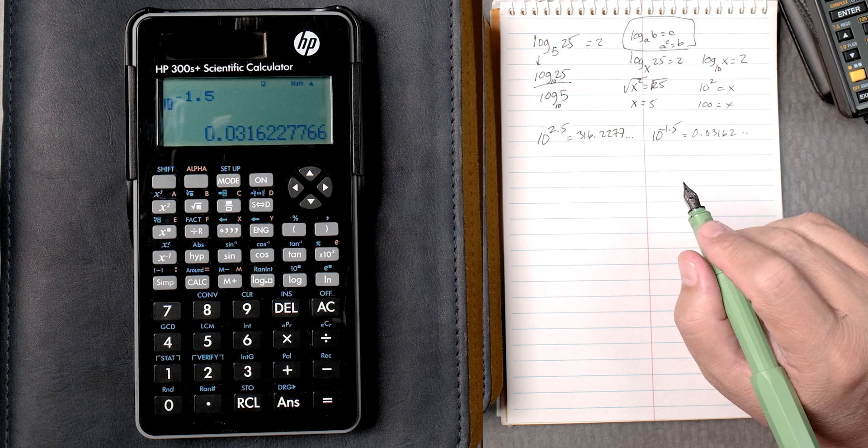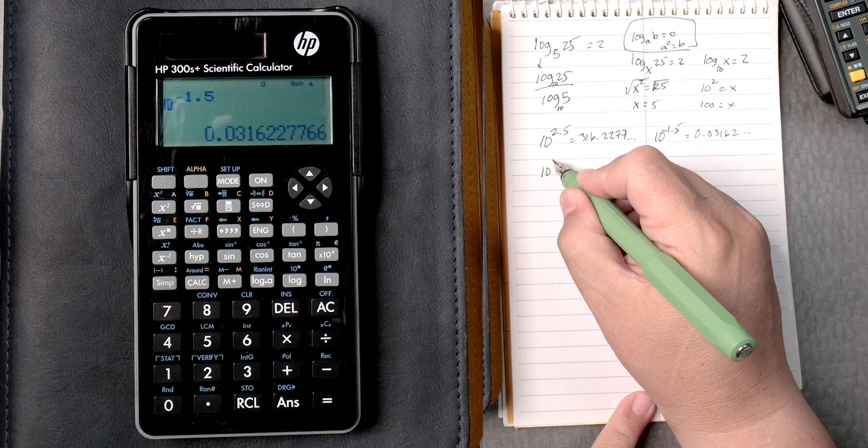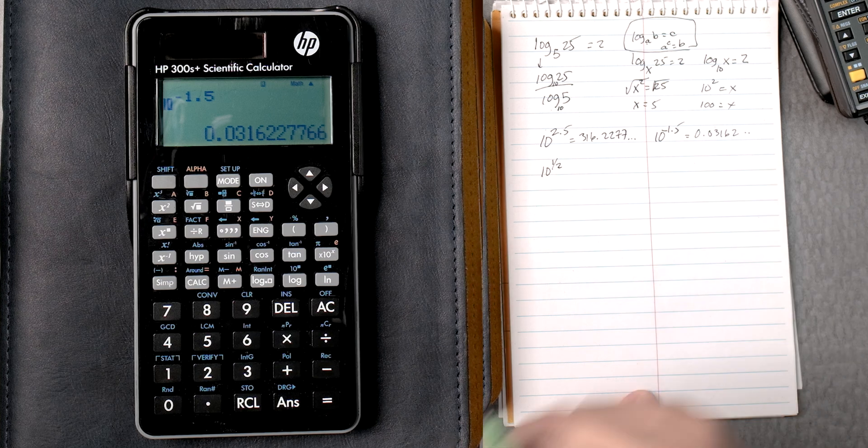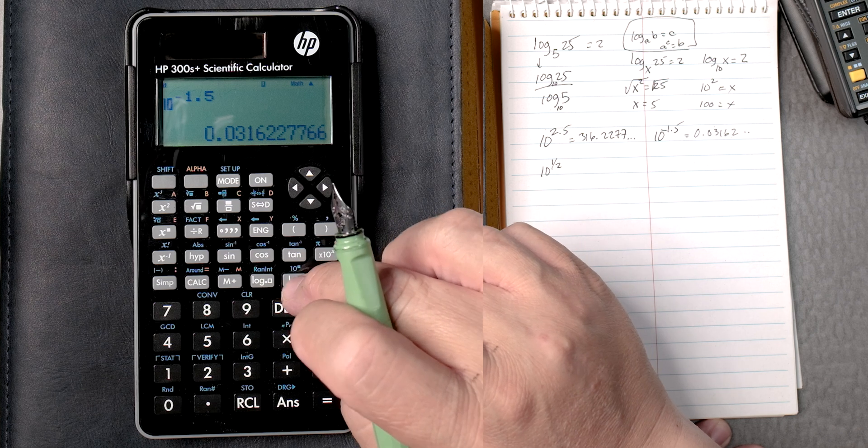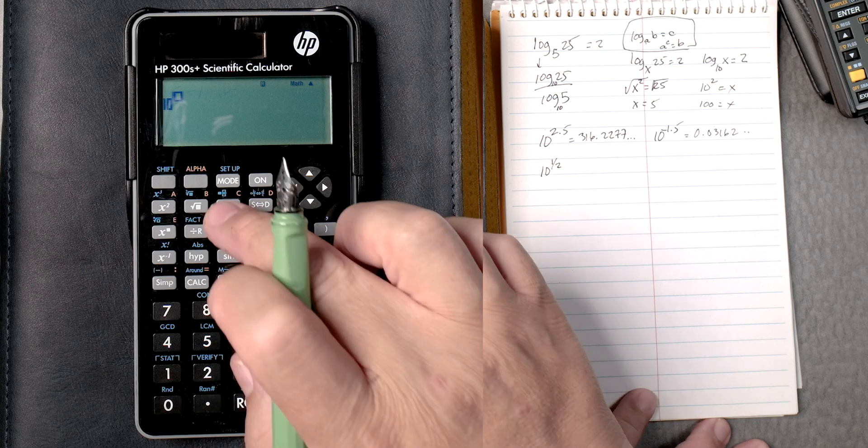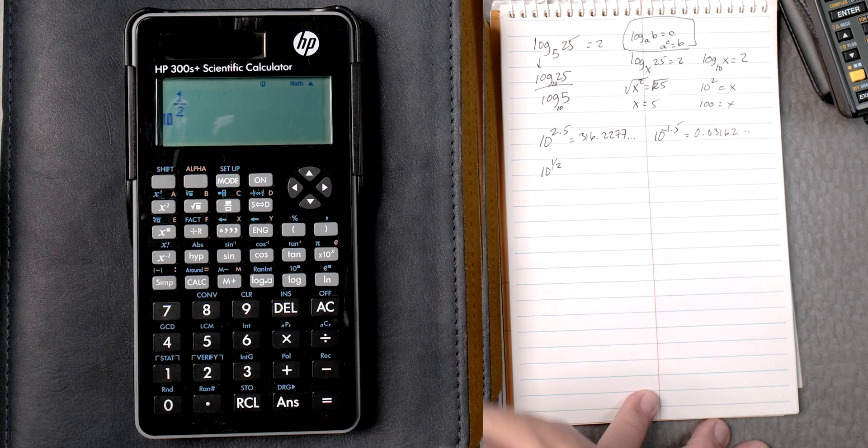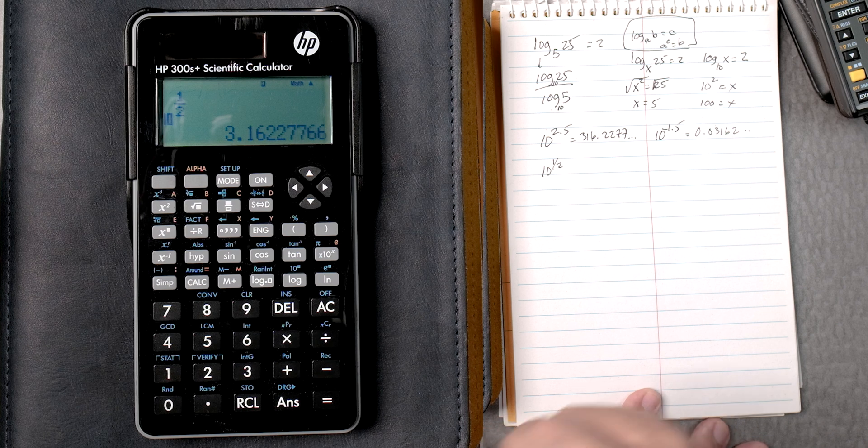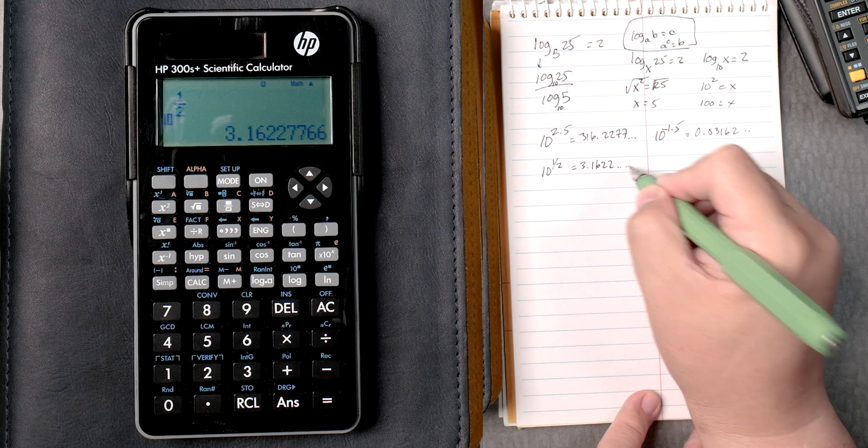So let's do 10 to the 1 half. Same thing, shift, and then we're going to go log. And this one has a fraction button. So let's do 1, the fraction button 2, so 2 to the half, and it gives you 3.1622 and so forth.